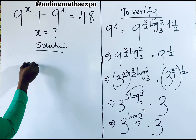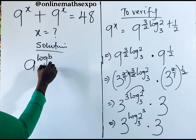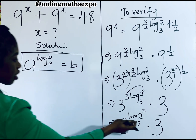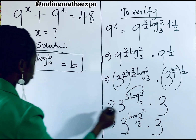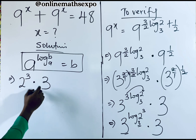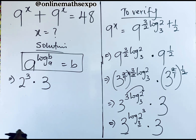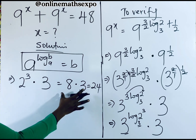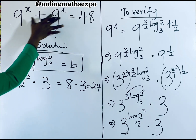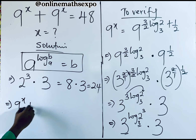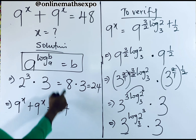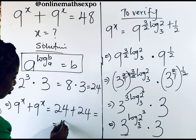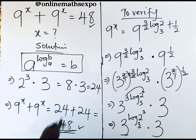Now apply the rule that a to the power of log base a of b equals b. Since the base 3 matches, 3 to the power of log base 3 of 2 cubed equals 2 cubed, which is 8. So we get 8 multiplied by 3, giving us 24. Therefore 9^x plus 9^x equals 24 plus 24, which gives us 48 — exactly what we have on the right side of the equation.